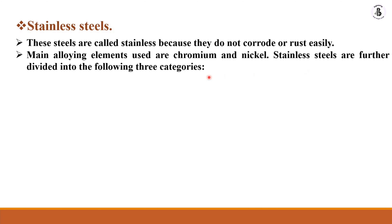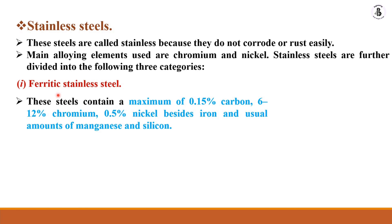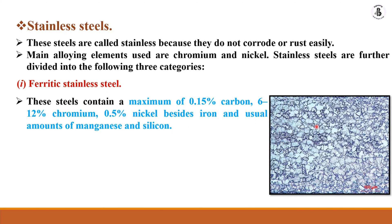Stainless steels are further divided into three categories. The first one is ferritic stainless steel, where the ferrite structure is present. These steels contain 0.15 percent carbon, 6 to 12 percent chromium, and 0.5 percent nickel, besides iron and usual amounts of manganese and silicon to improve the properties of the material.